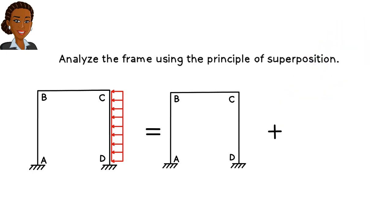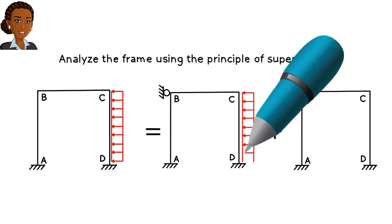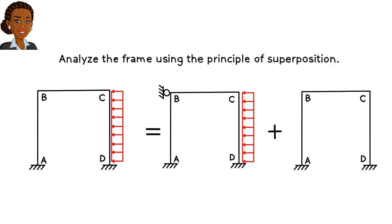We know how to analyze our frame if it is restrained against lateral displacement. So if we place a roller at the top of the frame like this, then we can analyze it using the moment distribution method as was discussed in lecture SA40.